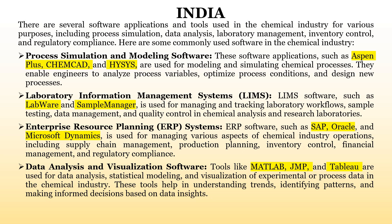The third one is enterprise resource planning (ERP) systems. Basic ERP software includes SAP, Oracle, and Microsoft Dynamics. This ERP software helps us to understand what raw materials are lacking or being excessively used. These can be understood through enterprise resource planning systems, which cover chemical industry operations including supply chain management, production planning, inventory control, financial management, and regulatory compliance.